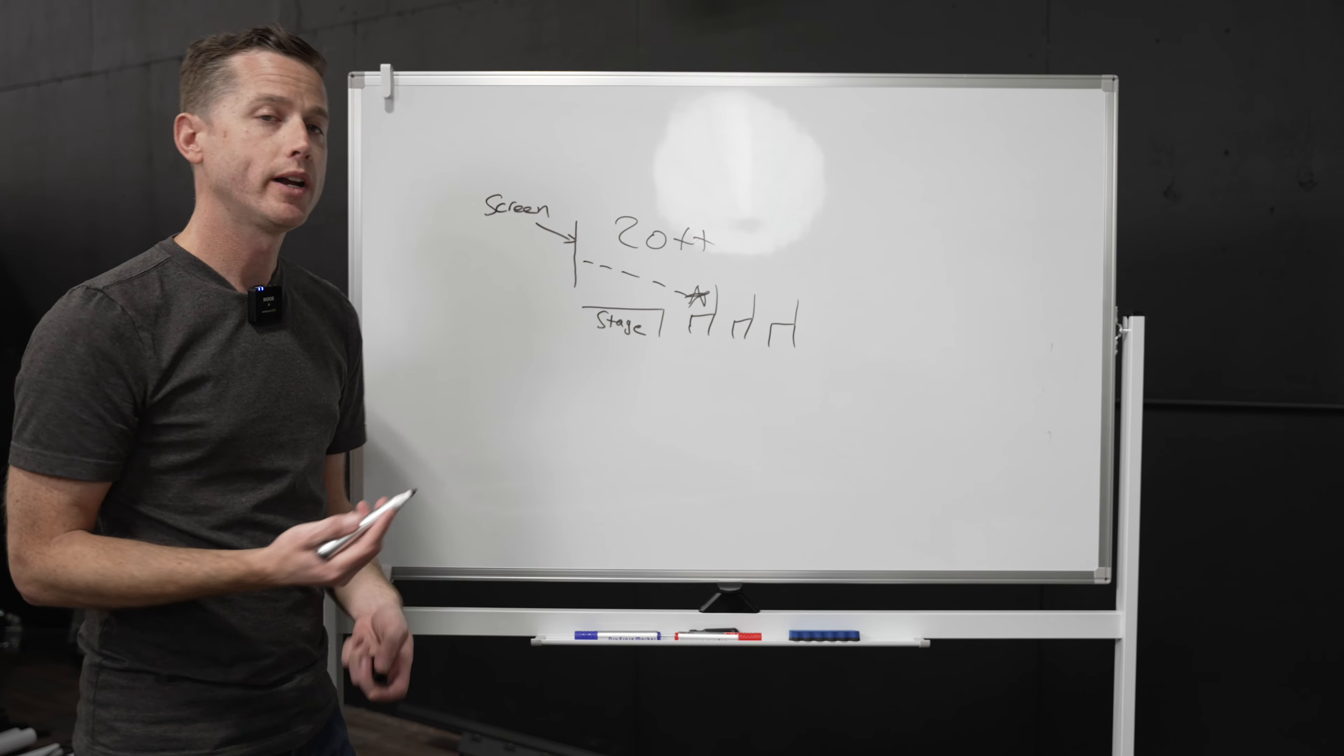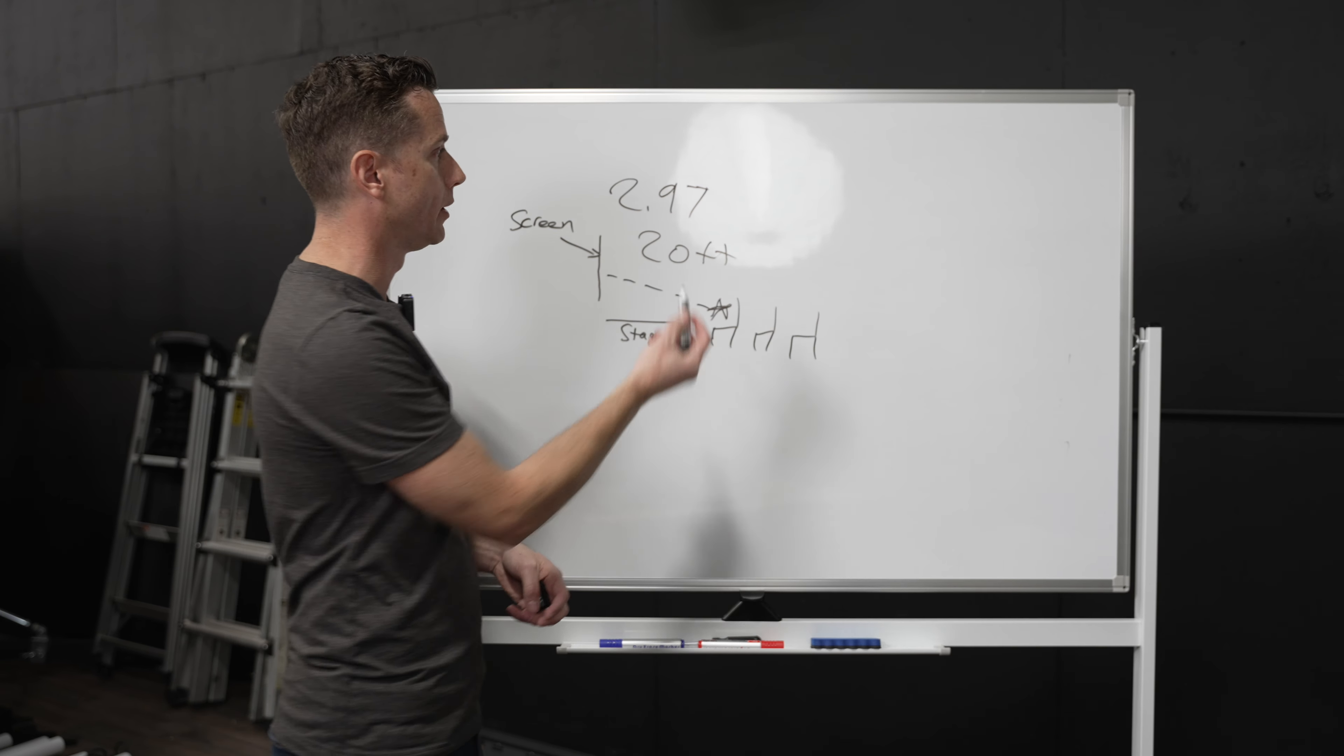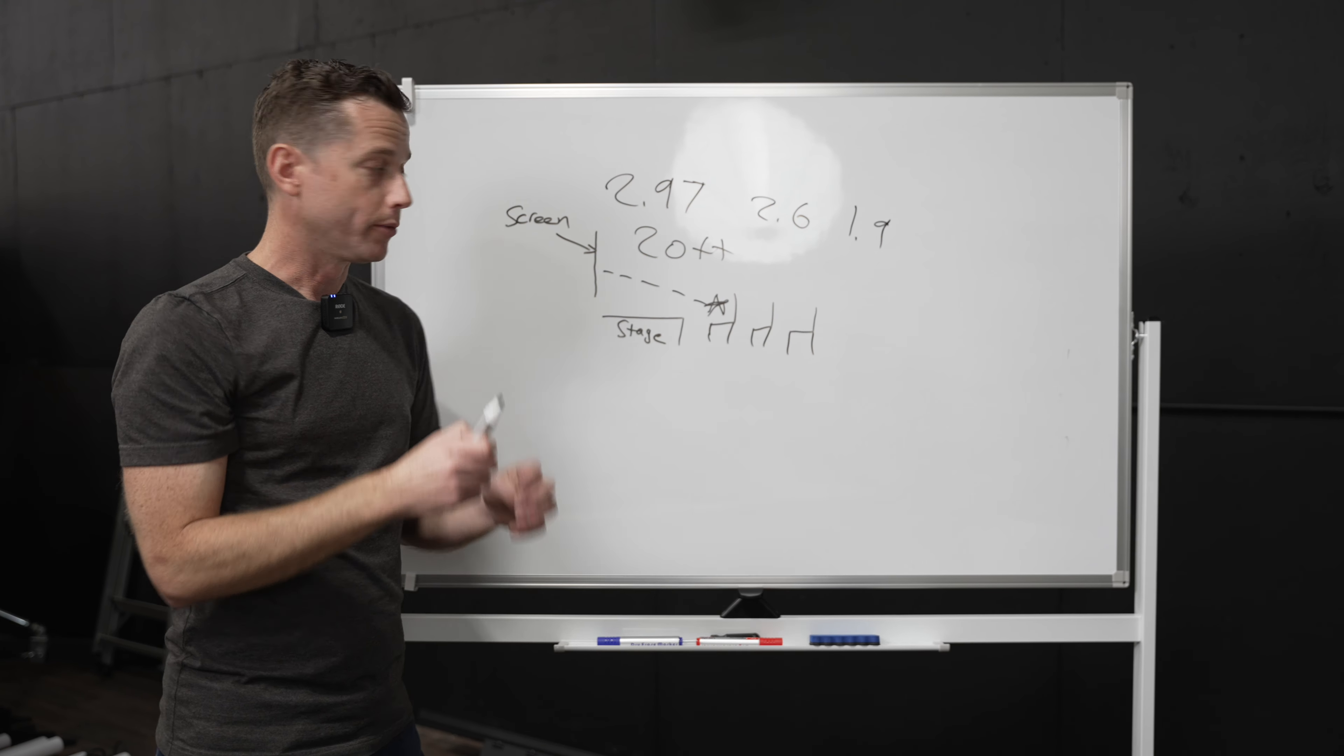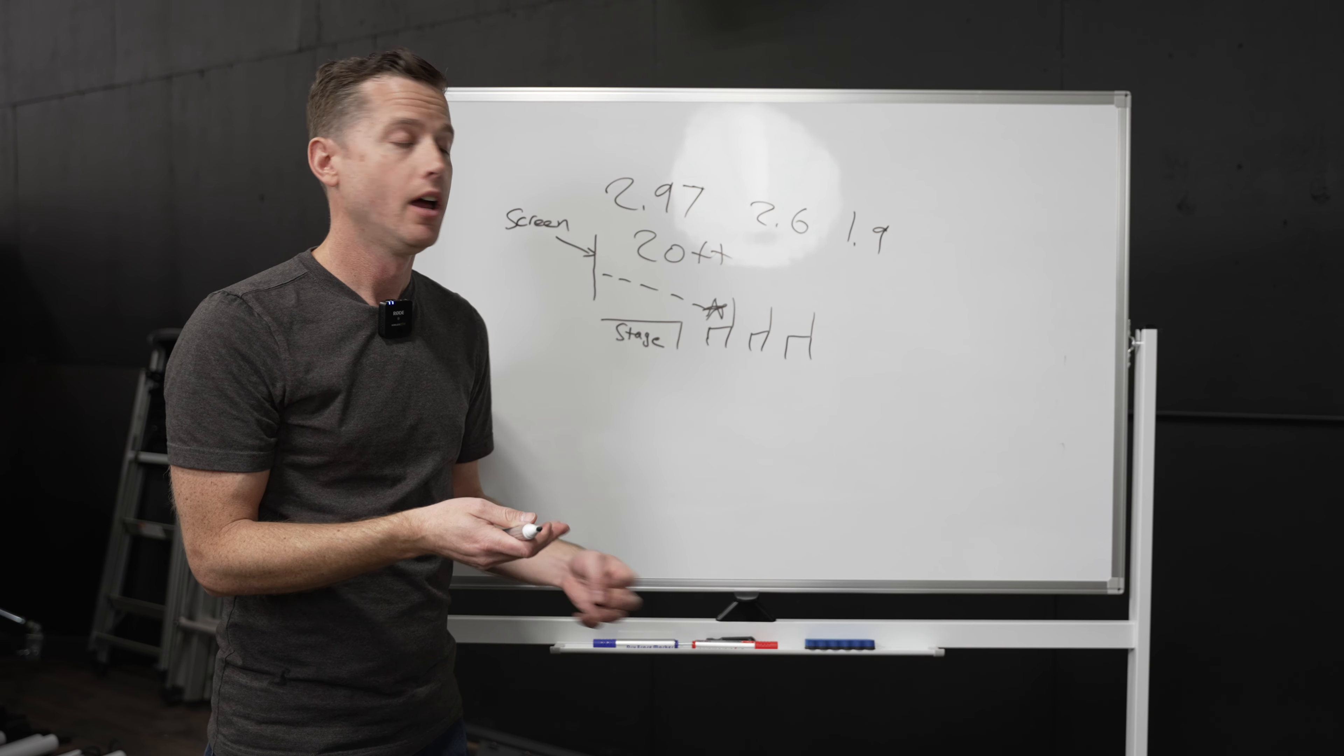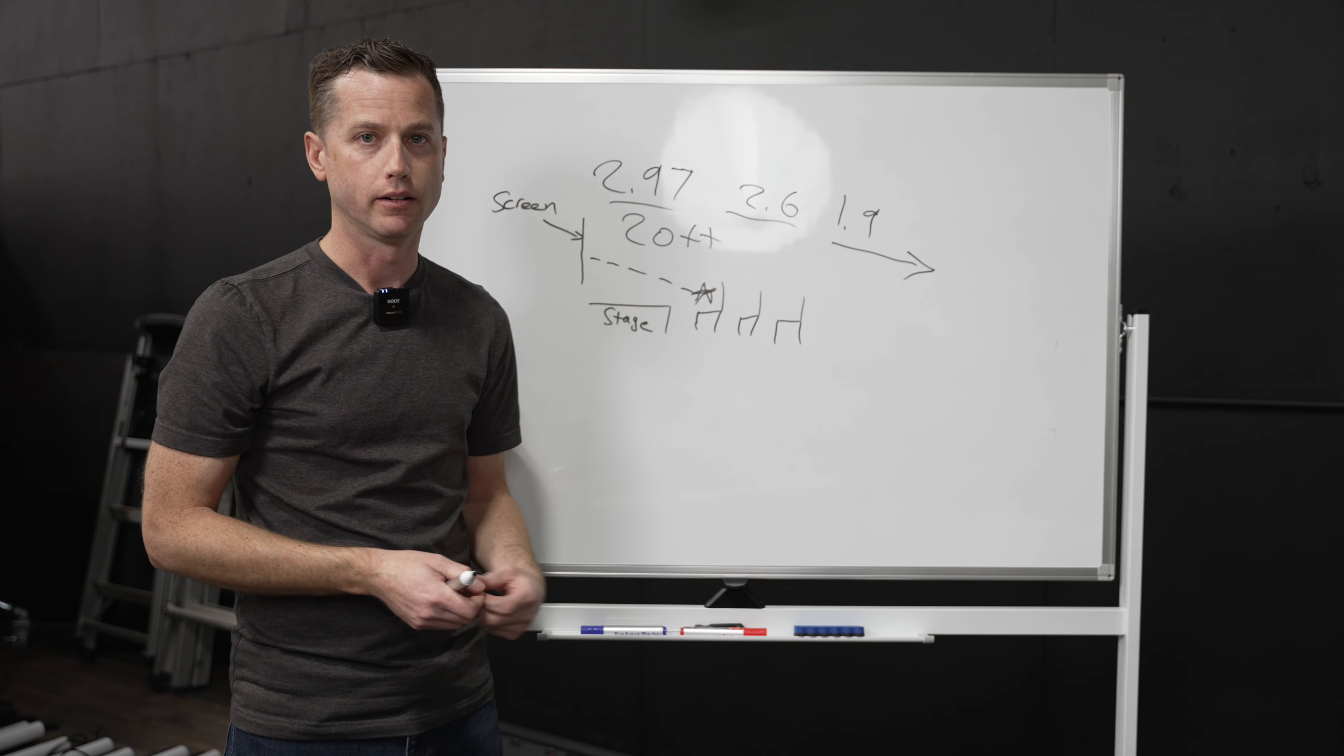So in this case of 20 feet, a 2.97 would be advised, and of course you can always go higher resolution or tighter pixel pitch such as a 2.6. In this case, doing a 1.9 or smaller pixel pitch, you wouldn't need, and it would almost be just utilizing funds unnecessarily. This is the correct pitch to be used. Anything beyond this in a smaller area, you would be overspending for that application.